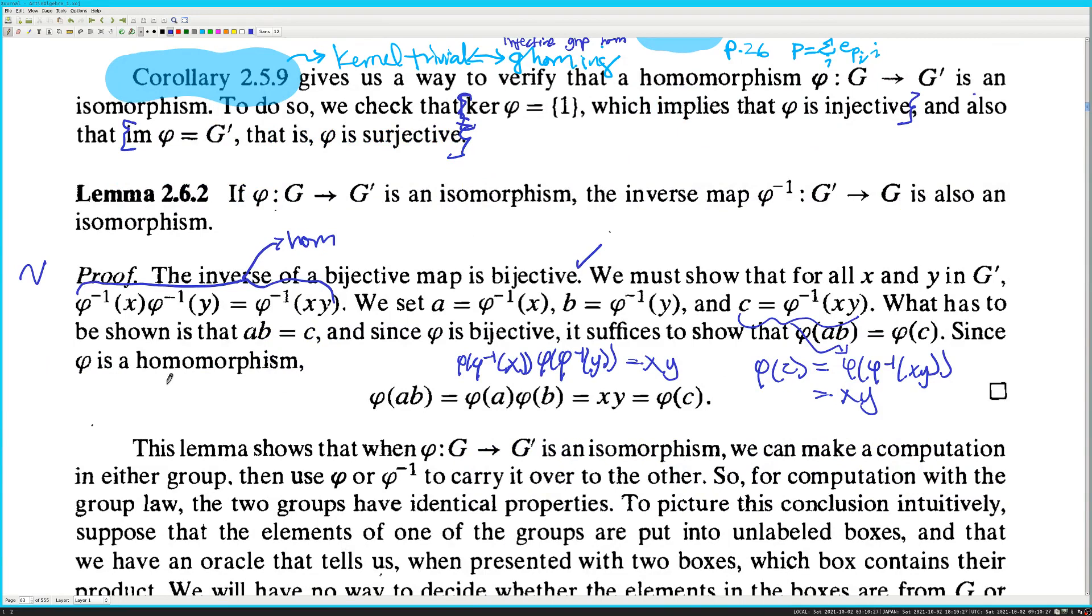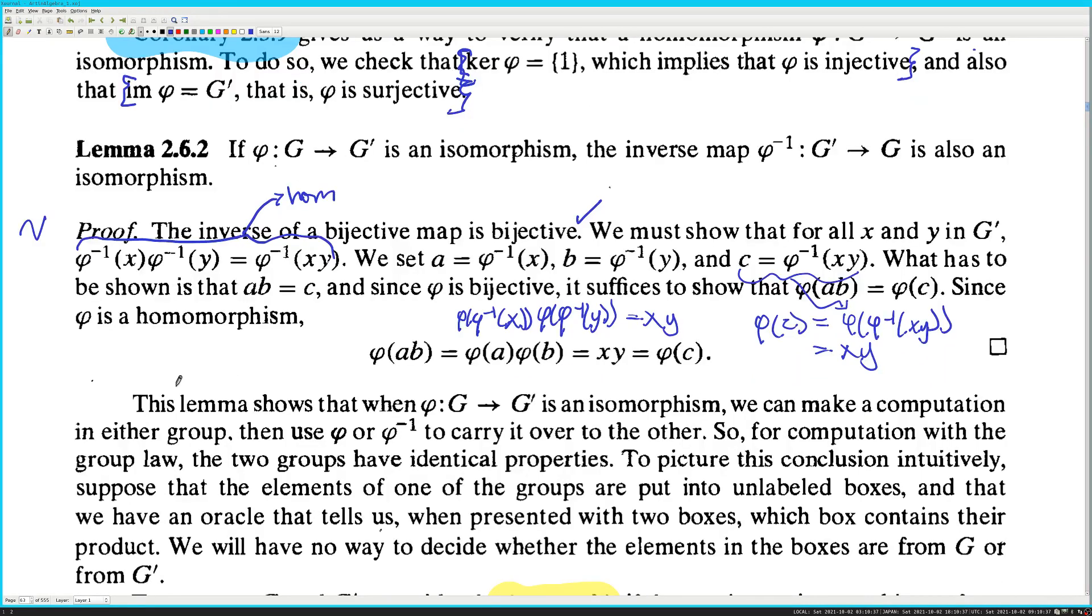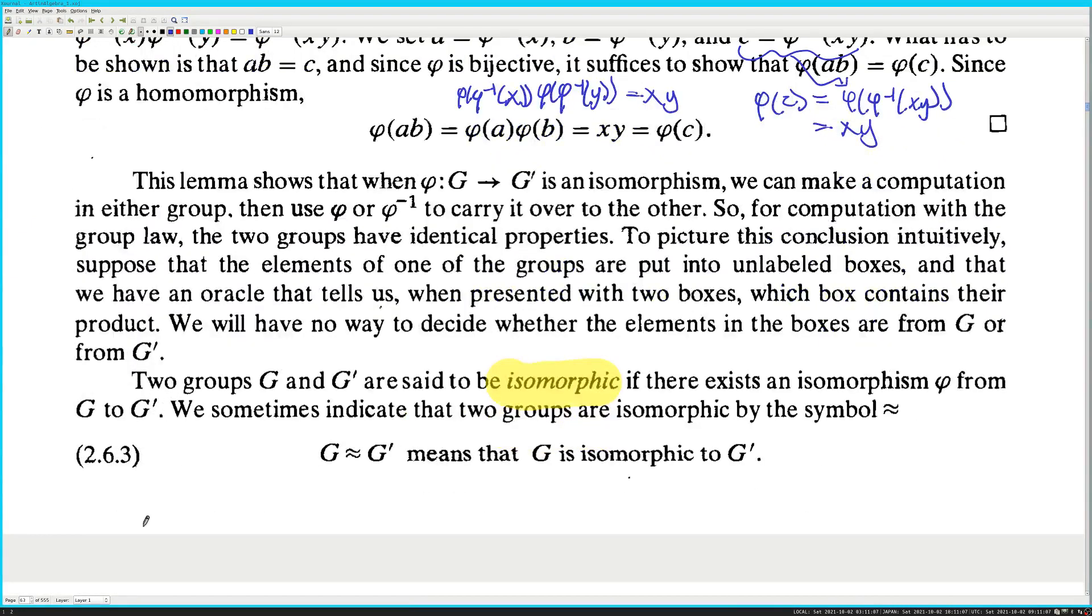This lemma shows that when G to G prime is an isomorphism, we can make a computation in either group and use phi or phi inverse to carry it over to the other. So for computation with the group law, the two groups have identical properties. To picture this conclusion intuitively, suppose that the elements of one of the groups are put into unlabeled boxes, and that we have an oracle that tells us when presented with two boxes, which box contains their product. This is a fucking stupid analogy. I'm sure it would make more sense if I... It was different, but...